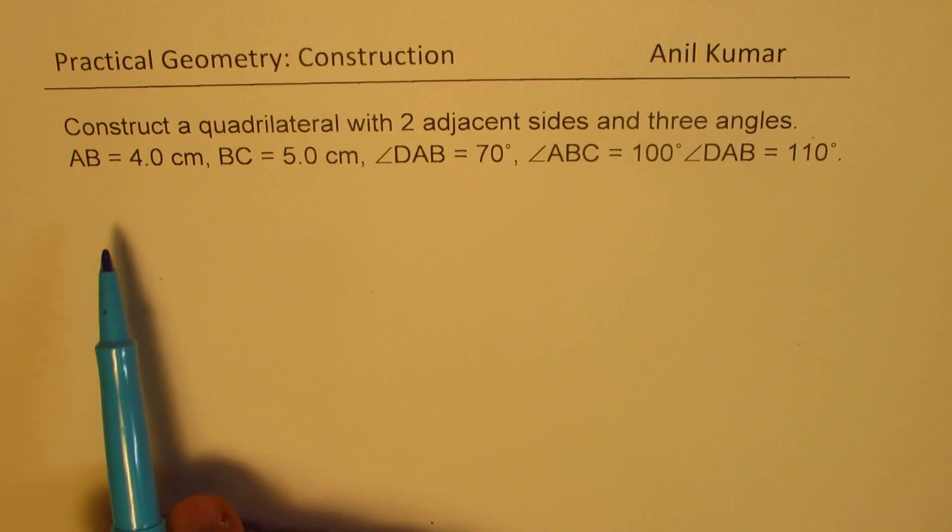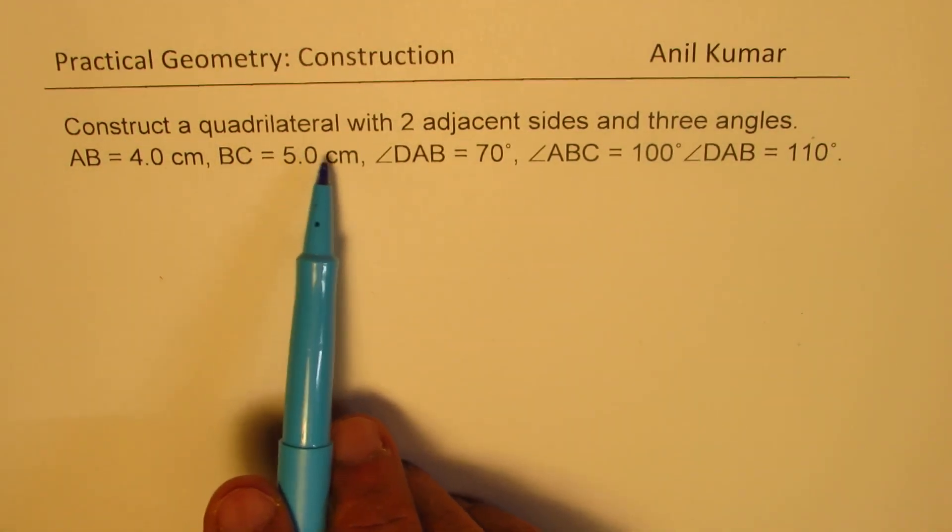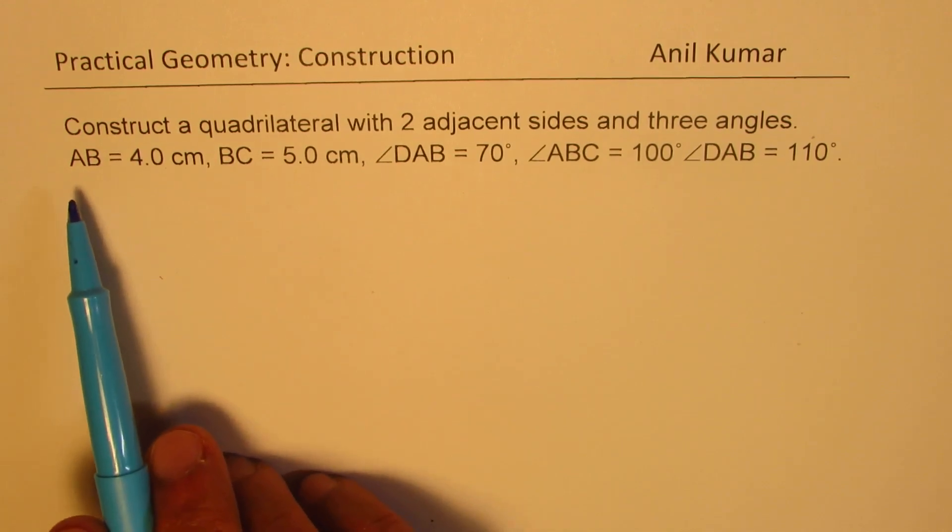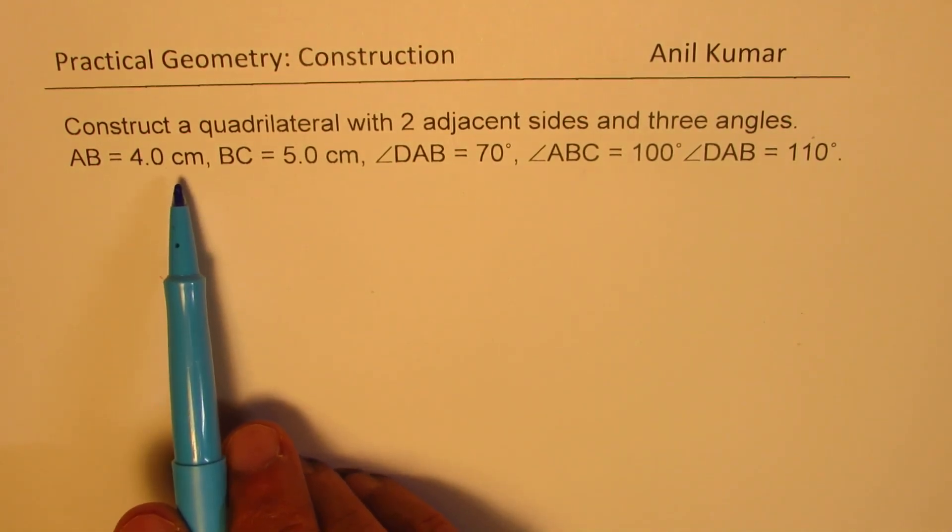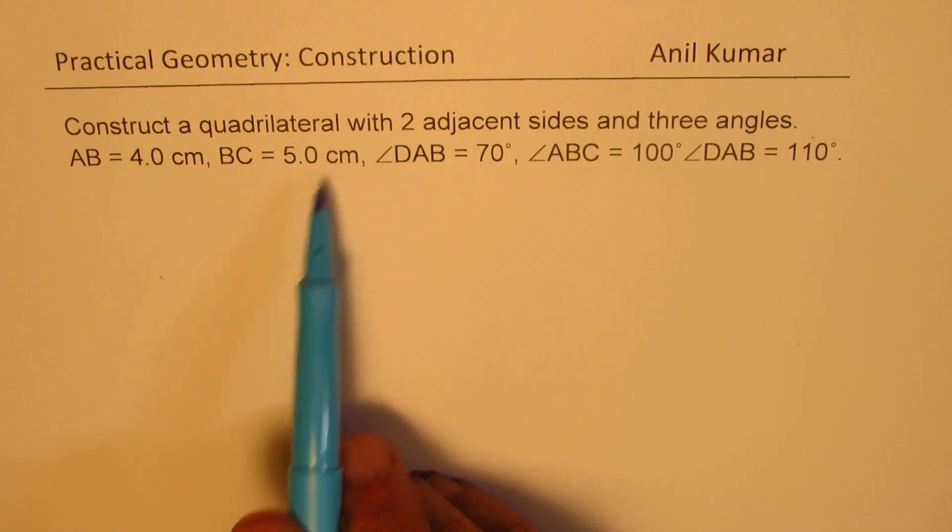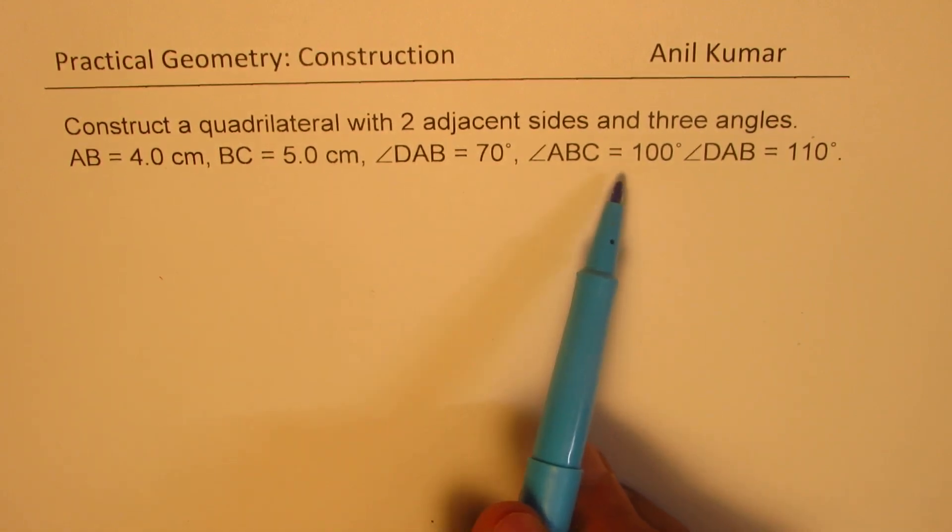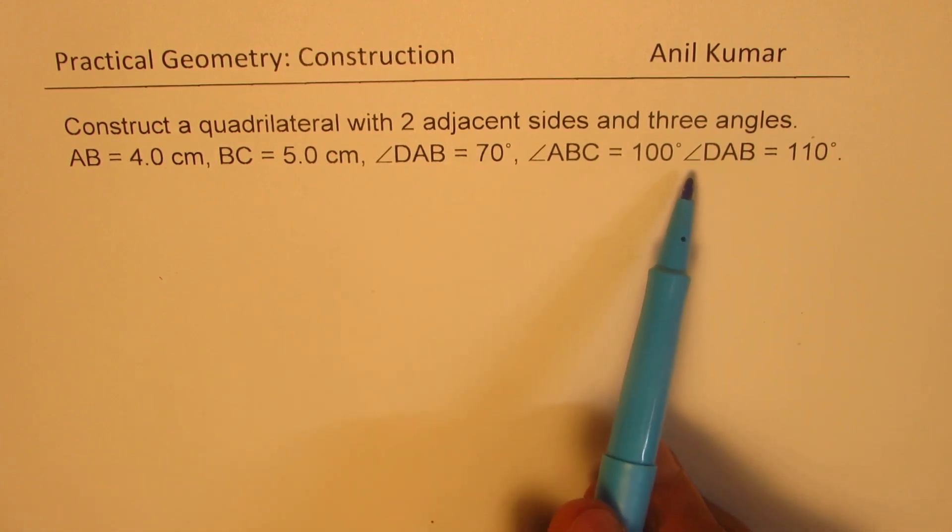The question here is: construct a quadrilateral with two adjacent sides and three angles. AB is 4 centimeters, BC is 5 centimeters, angle DAB is 70 degrees, angle ABC is 100 degrees, and angle DAB is 110 degrees.